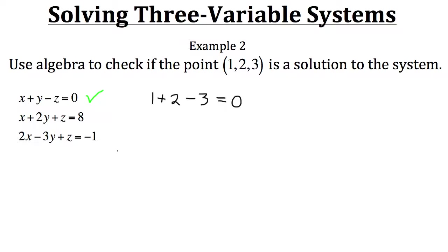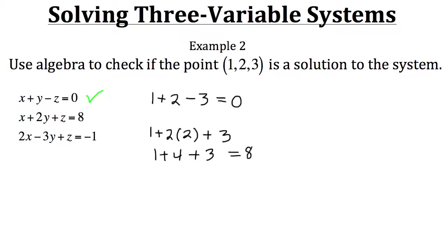Now let's try the second equation: x plus two y plus z, where x is one, y is two, and z is three. One plus two times two is one plus four, and then plus three. One plus four is five, plus three gives us eight, which matches the second equation. So the second equation checks out as well.